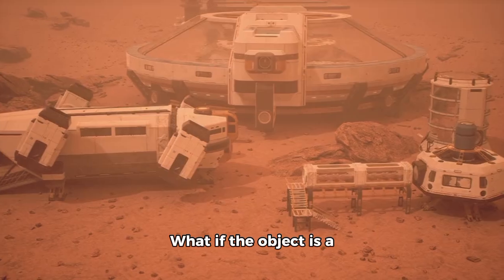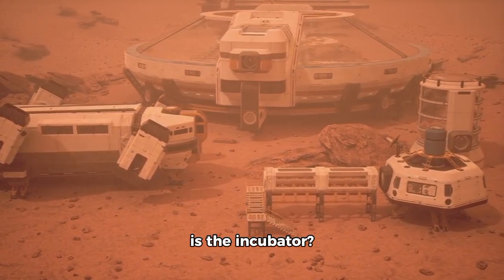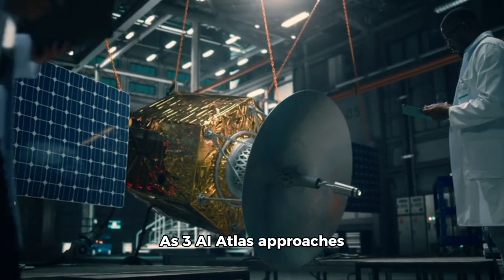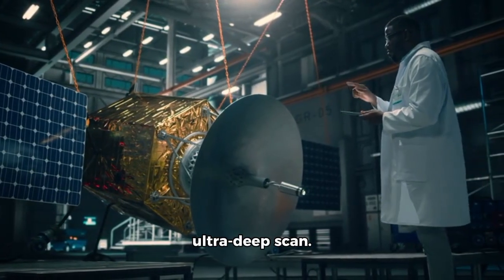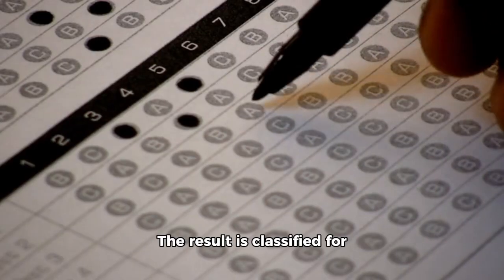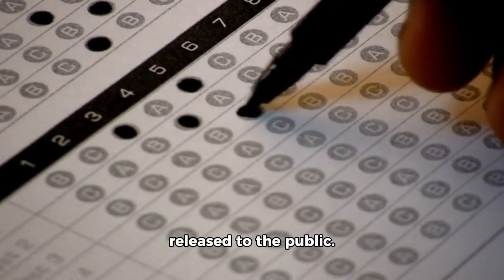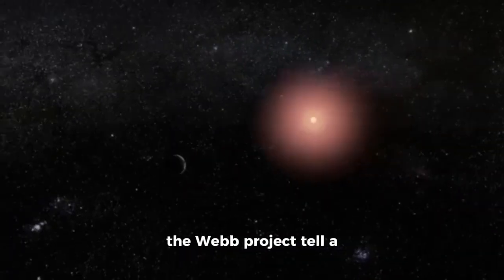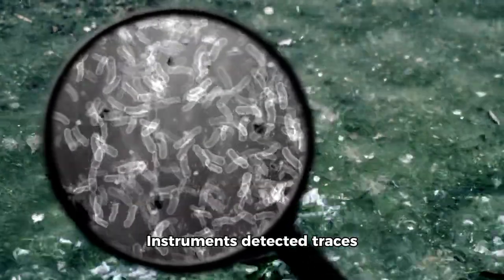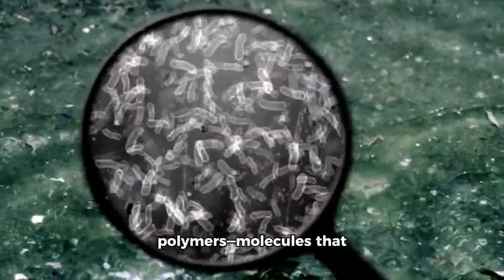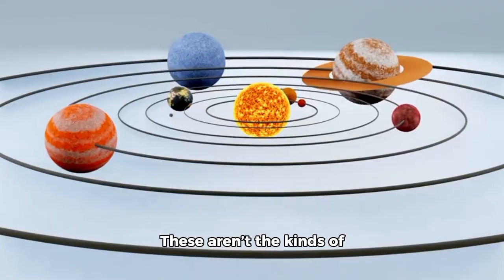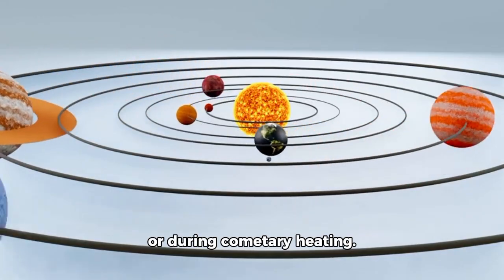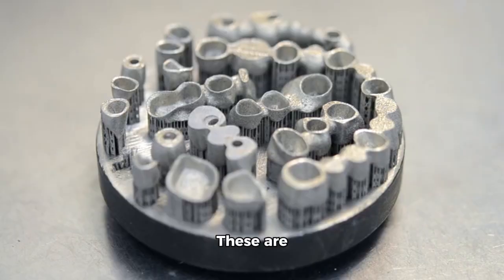It raises a terrifying question: what if the goal was never destruction? What if the object is a delivery system, and Mars is the incubator? As 3E Atlas approaches its closest point to Mars, the James Webb Telescope locks onto it for one final ultra-deep scan. The result is classified for 48 hours before a portion is released to the public. But leaks from within the Webb project tell a much darker story. Instruments detected traces of synthetic polymers, molecules that resemble Earth-made plastics and carbon nanotubes intermixed with gaseous substances. These aren't the kinds of structures that form in vacuum or during cometary heating. These are engineered materials.